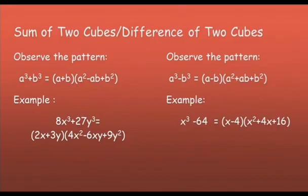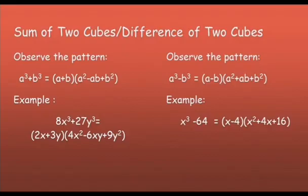Example: 8x cubed plus 27y cubed. The first factor is 2x plus 3y, because the cube root of 8 is 2, the cube root of x cubed is x, the cube root of 27 is 3, and the cube root of y cubed is y. To get the second factor, square 2x: 2x times 2x equals 4x squared. The middle term is 2x times 3y equals 6xy, with a negative sign affixed. Then 3y times 3y gives 9y squared.